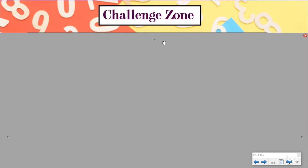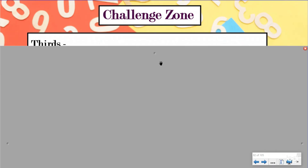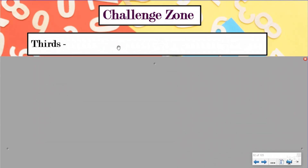If you did not get the first couple, that's totally fine. I put them in order from easiest to most difficult. The first one I thought was pretty easy was thirds. You could have said that one-third of an hour was equal to 20 minutes, two-thirds would be equal to 40, and three-thirds would be equal to 60.